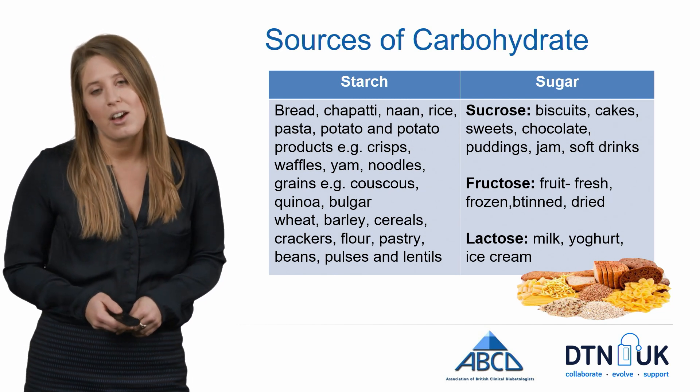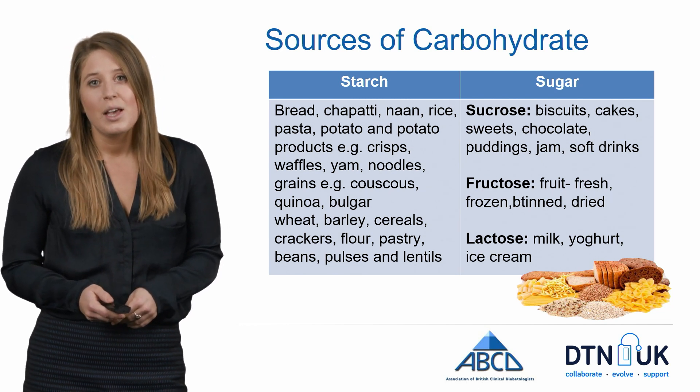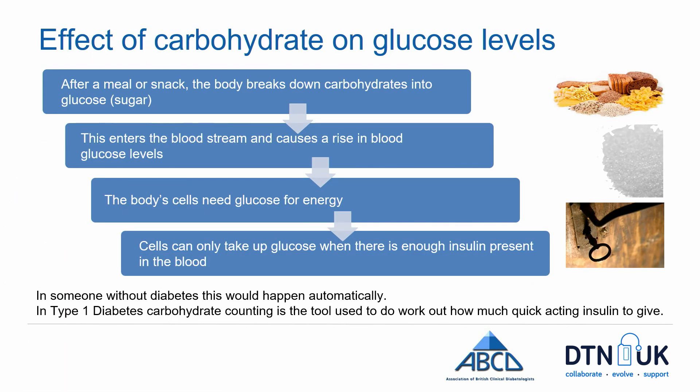It's crucial to understand where carbohydrates come from in the diet because carbohydrates have a direct effect on blood glucose levels. When we eat a meal or snack containing carbohydrates, the body breaks this down into glucose or sugar. This glucose then enters the bloodstream and causes a rise in blood glucose levels. The body's cells need glucose for energy. Insulin is a hormone which makes it possible for glucose to enter the body's cells from the blood.